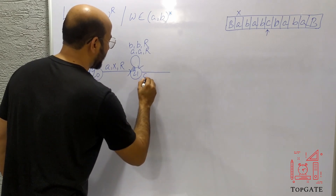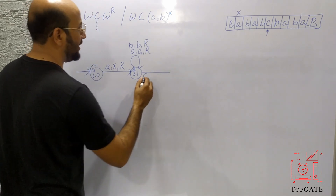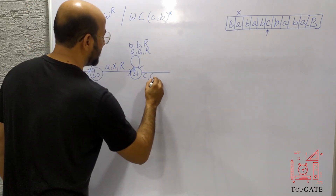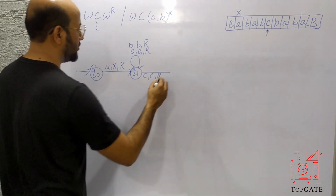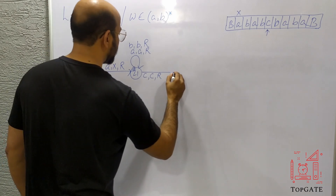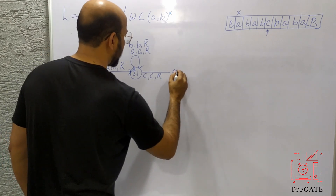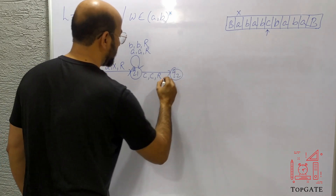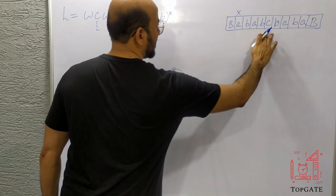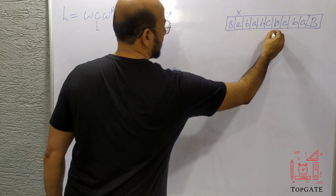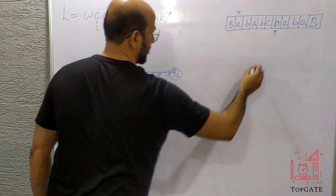Starting with initial state Q0: we find A, change it to X, and move right. On the right side we find B, A, B — all these are skipped with a self-loop: if you find B let it be B and move right; if you find A let it be A and move right. After skipping, the pointer points to C. I do not take a self-loop for C here — instead, if you find C, let it be C and go right, moving to state Q2.